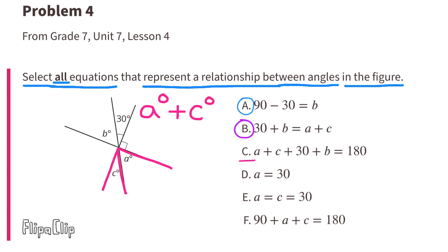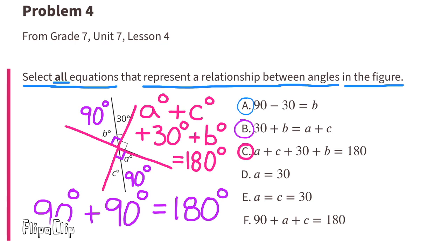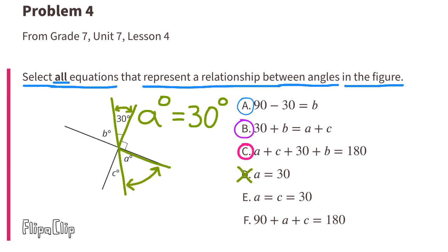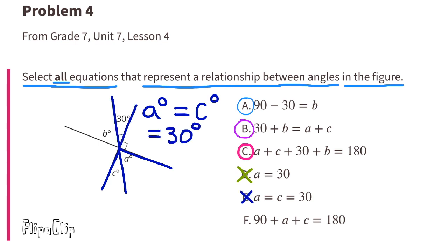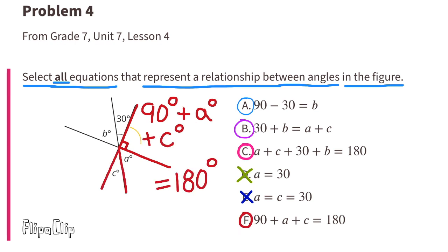C: The A-degree angle plus the C-degree angle plus the 30-degree angle plus the B-degree angle equals 180 degrees. That's true because 90 degrees plus 90 degrees equals 180 degrees. I would select C. D: Angle A equals 30 degrees — that's not true, because the A-degree angle is obviously much larger than 30 degrees, so I would not select D. E: A equals C equals 30 — I would not select this one because those angles are not the same size. F: 90 plus A plus C equals 180 degrees — that's true because angle A plus angle C equals 90 degrees, and 90 plus 90 equals 180. So I would select F.